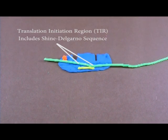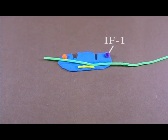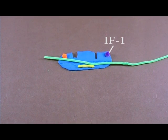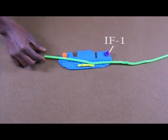Initiation factor 1 is bound to the A-site and blocks the A-site. The mRNA transcript begins to move through the ribosome in a 5' to 3' direction.